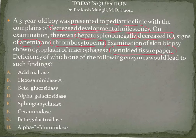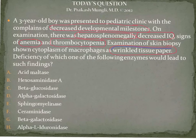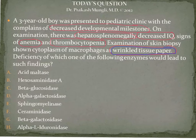Out of all the signs seen here, one of the key giveaway signs is the wrinkled tissue paper — pay attention to this finding. The cytoplasm having a wrinkled or crumpled tissue paper appearance points to a disorder called Gaucher's disease.